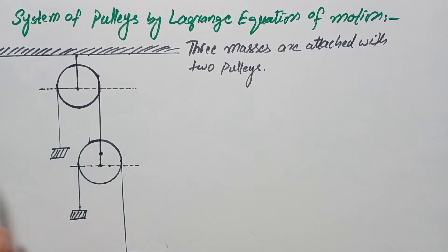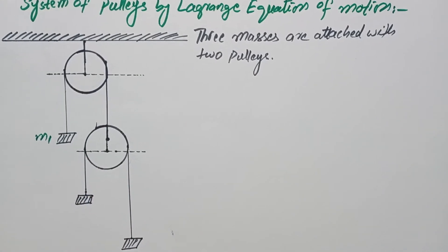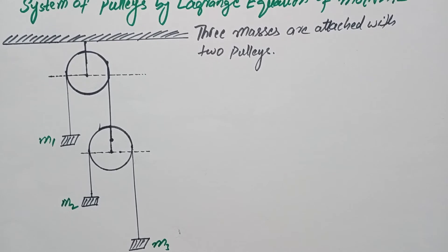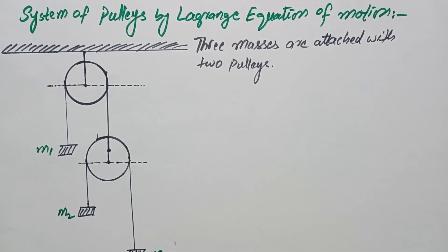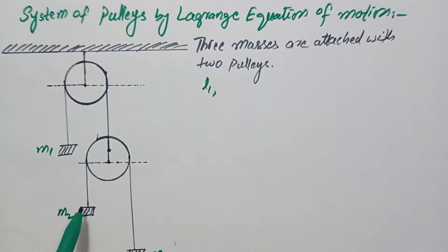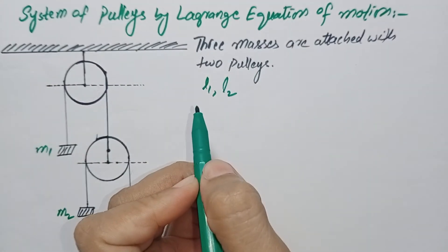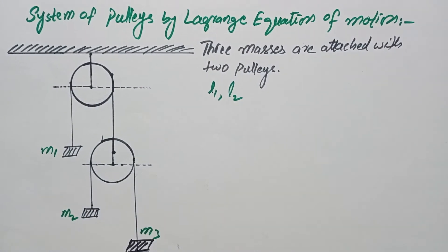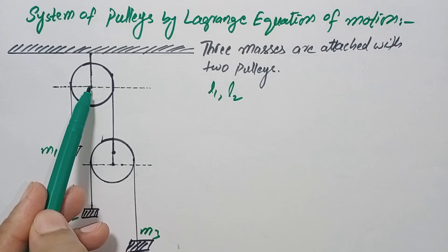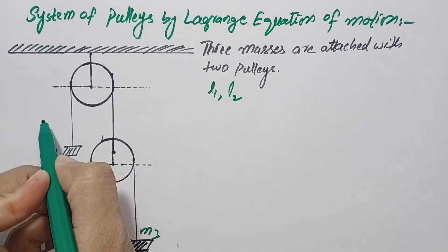We have three masses which are attached with two pulleys. Let's say these masses are m1, m2, and m3. These are attached with two pulleys. The length of the string attached with the first pulley is l1. The position of mass m1 with respect to the center of the first pulley is x1.